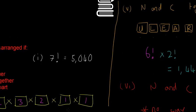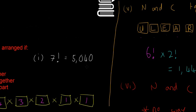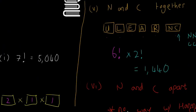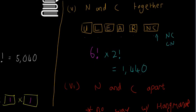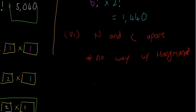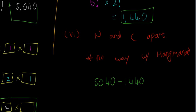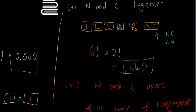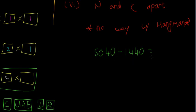Instead, the trick is to use subtraction. Overall, with no restrictions, there are 7 factorial = 5,040 ways of arranging the letters in 'nuclear'. And we just found there are 1,440 ways where N and C are together. So the number of ways where N and C are apart is 5,040 minus 1,440, which equals 3,600.